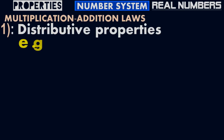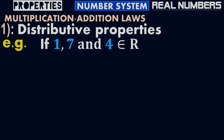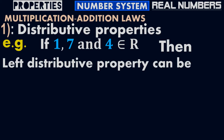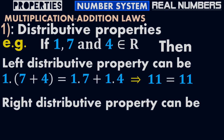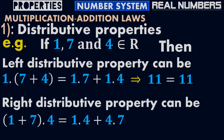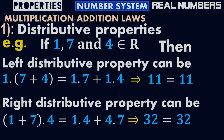Let me give you a mathematical proof. If a equals 1, b equals 7, and c equals 4, they belong to real numbers. According to the left distributive property: 1 times (7 + 4) equals 1 times 7 plus 1 times 4, which gives 11 equals 11. According to the right distributive property: (1 + 7) times 4 equals 1 times 4 plus 4 times 7, which gives 32 equals 32.